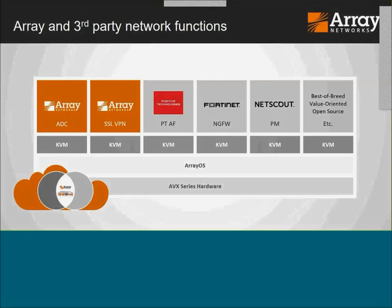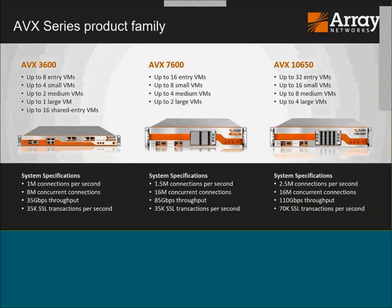The AVX series hardware runs the Array OS, virtualized using the KVM hypervisor. You can see a couple of Array networking and security functions riding on the platform, with the PT application firewall as well, plus potentially other vendors. Not only can you pay as you go for capacity, we have three system sizes — small, medium, large. The large supports 32 VMs; going down a size, you essentially divide by two each time, but still very flexible and powerful.